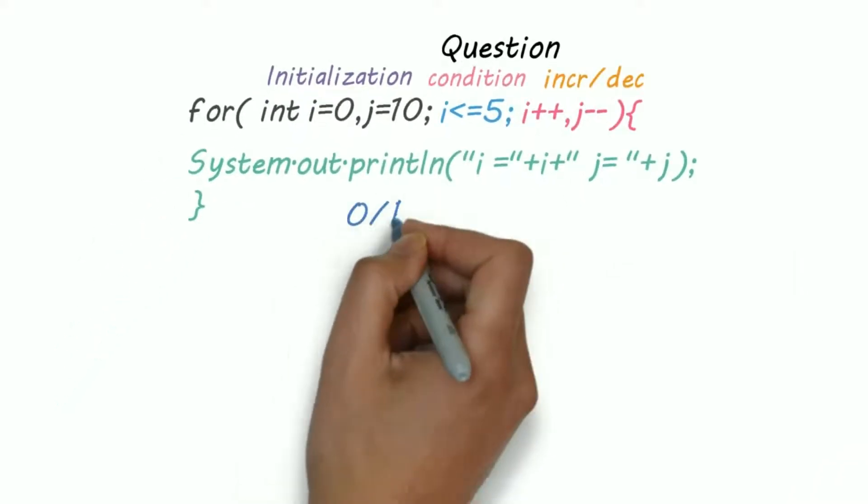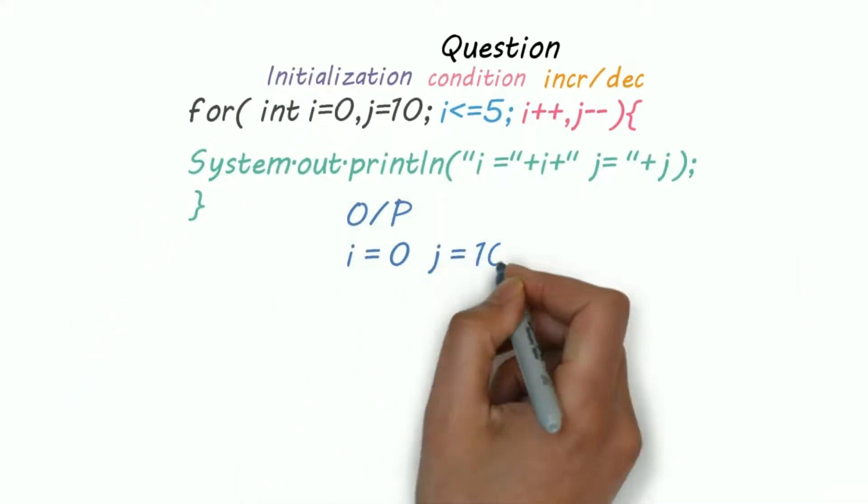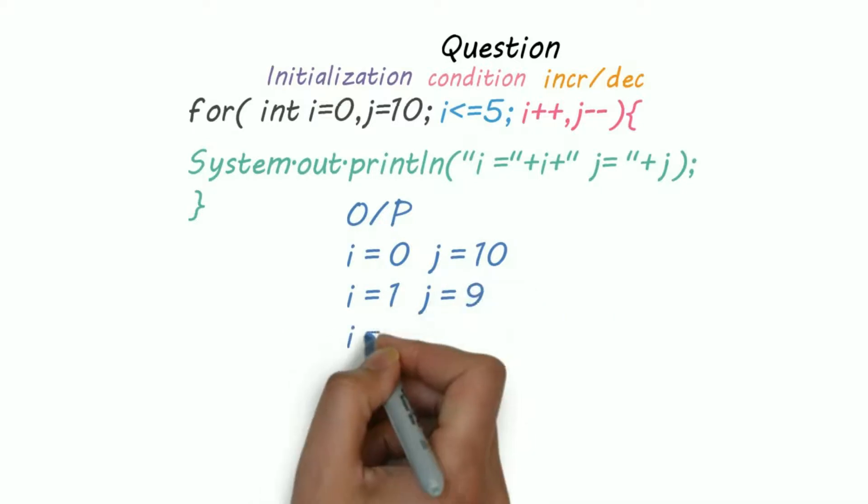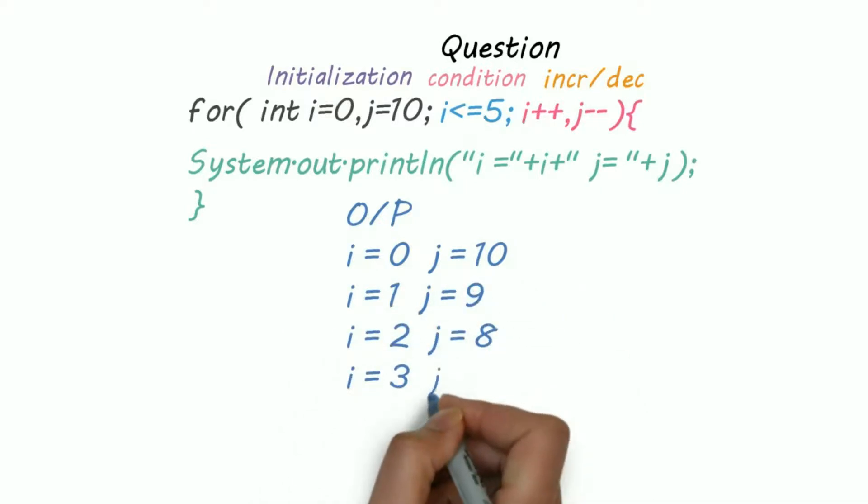At last is increment or decrement. We are incrementing i and decrementing j, which is okay, and the output of this program is...